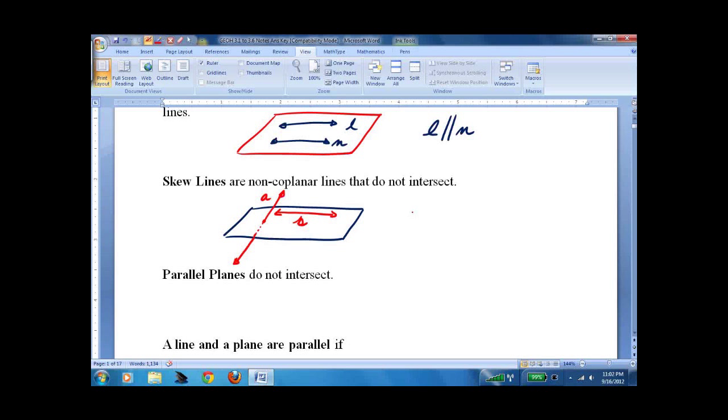Anyway, we would say A and B are skew lines.